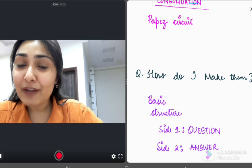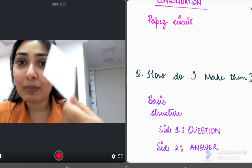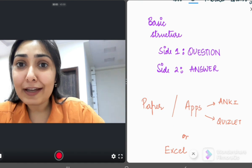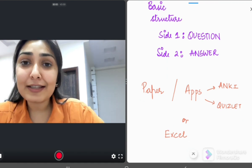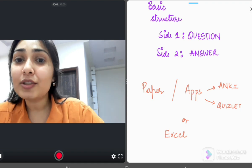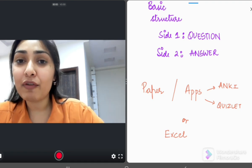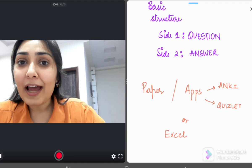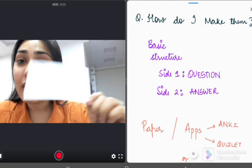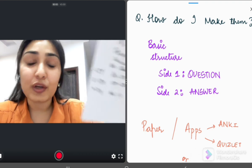Now, how can you make these flashcards? You can either make them on paper like I do or you can use apps like Anki or Quizlet or you can use Excel by making question in one column and answer in another column and just hide down the other corner and whenever you click it, it appears. So it acts like a flashcard only.